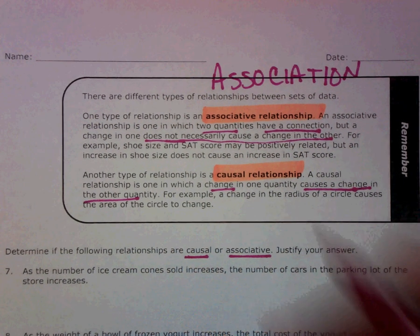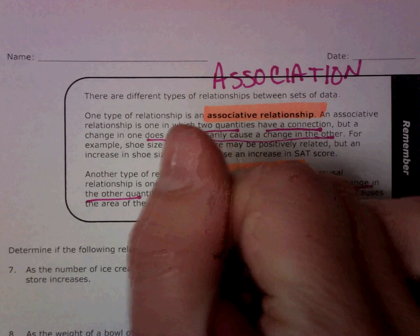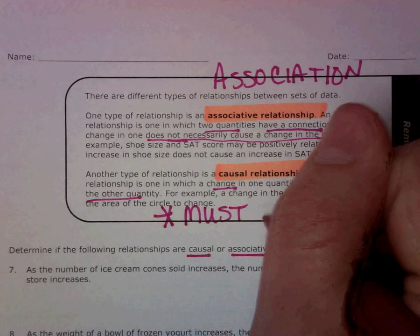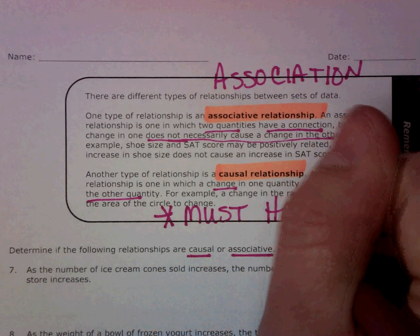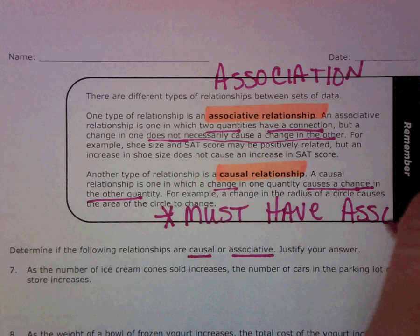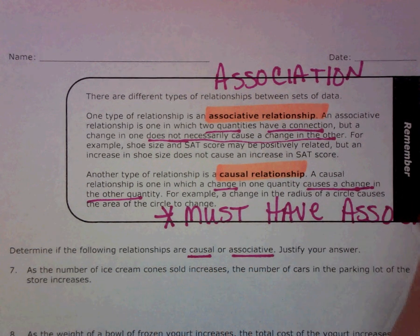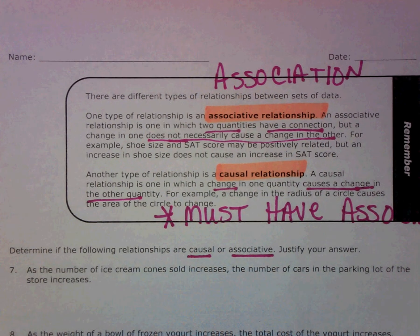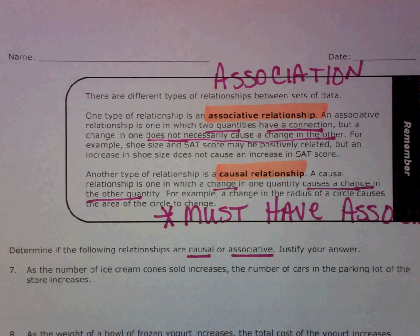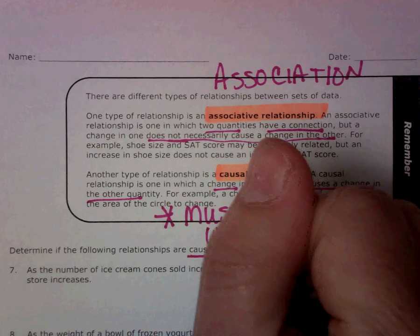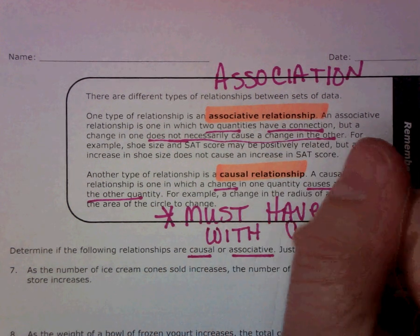To have a causal relationship, you must also have association. You can have association without causation, but you can't have causation without association. So, you must have association with causation.